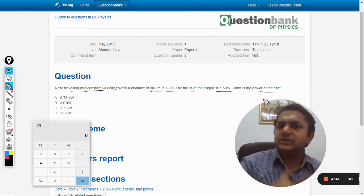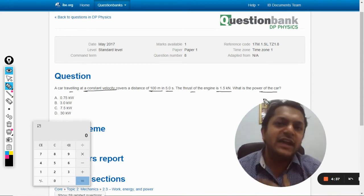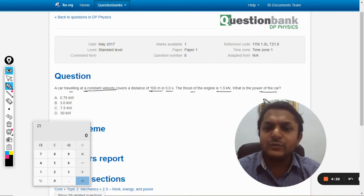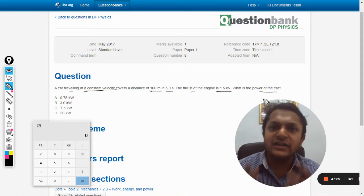Generally in these kind of questions, there is a thrust that is created by the engine and then there is friction, so you have to find the F net and there are so many things. But this question has been simplified for us by just one given statement: that the car is moving with a constant velocity.